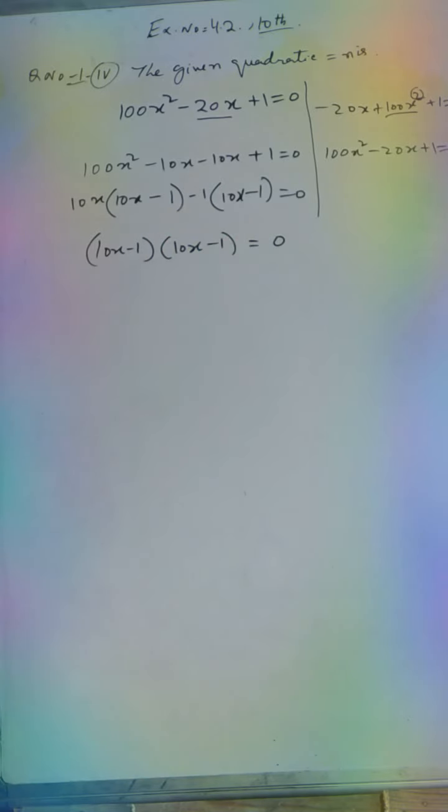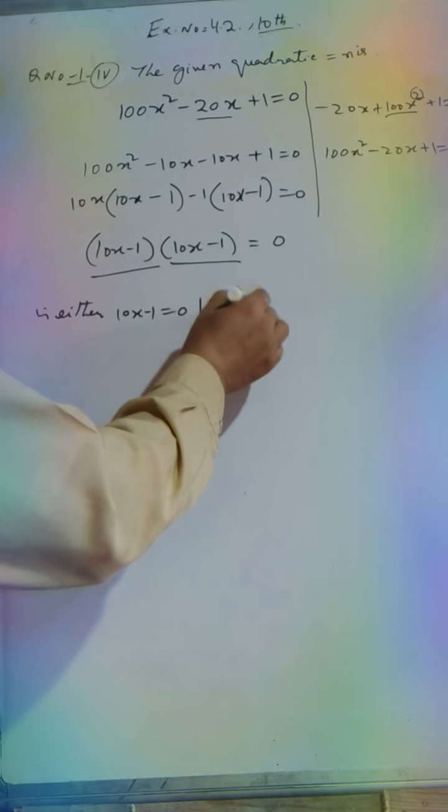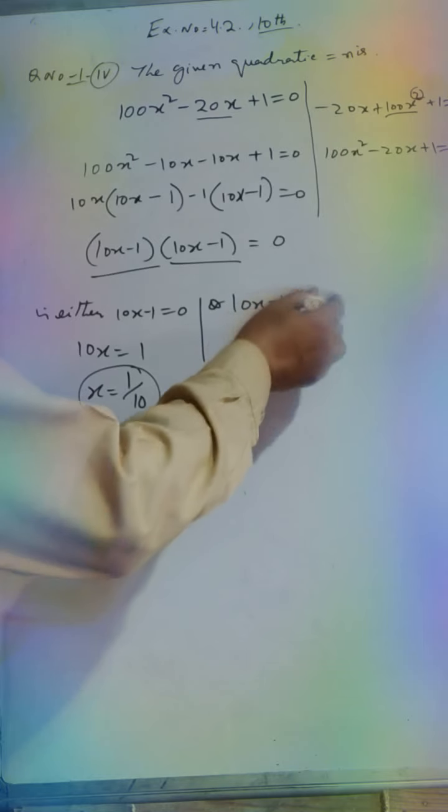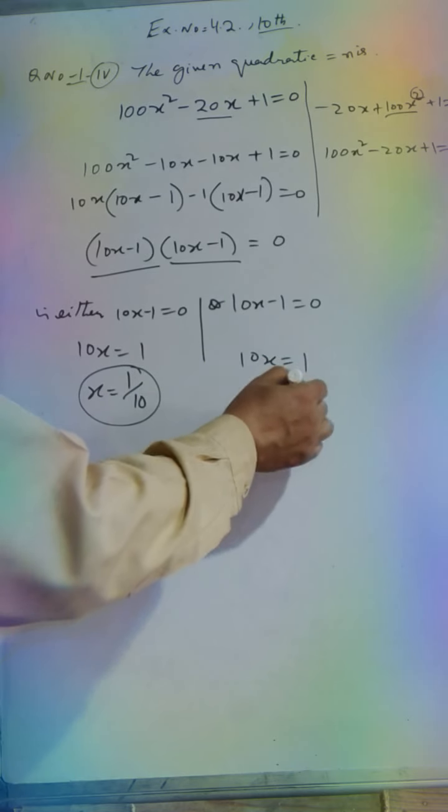This means that these two factors are equal to zero. When a product equals zero, either one factor equals zero or the other equals zero. So either 10x - 1 = 0 or 10x - 1 = 0. From this, 10x = 1, so x = 1/10.